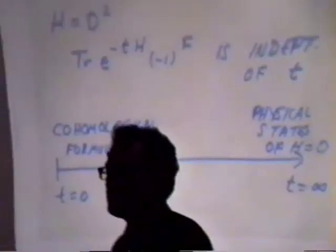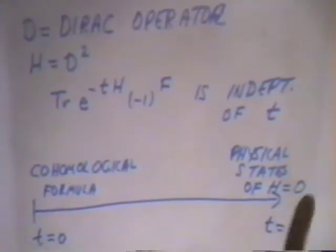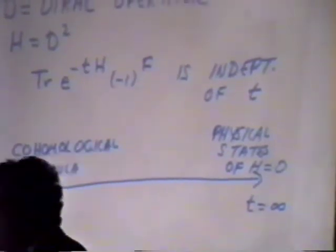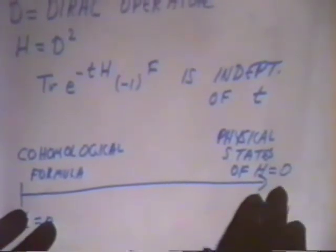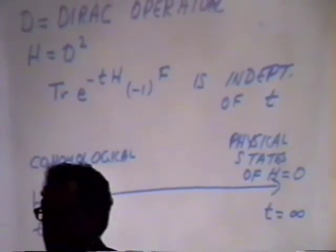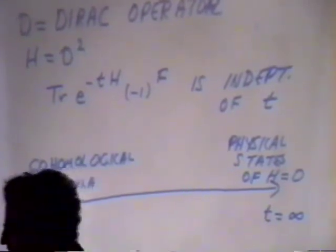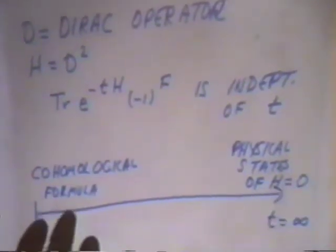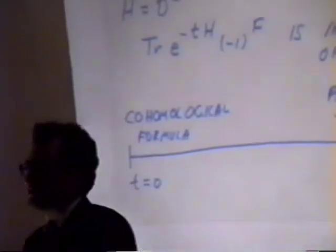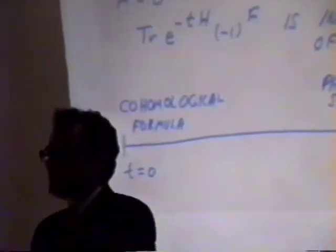For T going to zero, you use the short-time behavior of the heat kernel, and you get a cohomological formula. And for T going to infinity, you look at the zeros of the Hamiltonian — the physical ground states — and you get the description as the index of the operator. So the statement that these two are equivalent is the index theorem: something calculated by knowledge of the physics is equivalent to a cohomological formula. Historically, in the case of the index problem, this was regarded as the question, and this was regarded as the answer. In Donaldson theory, the shoe is on the other foot, in the sense that Donaldson's definition involved a kind of cohomological formula — intersections on moduli spaces. So the question was posed here, and the answer, which involves knowledge of the physics, is at large times.